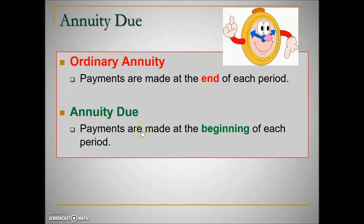Because the money is being deposited earlier in the account, the interest is going to be greater in an annuity due — the money is in there longer versus an ordinary annuity, where nothing is happening in the account and there is no interest growing until the payment is made.